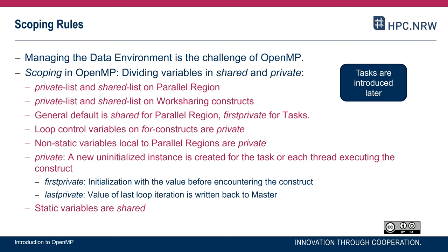The general default is shared for a parallel region — everything declared before the parallel region will be shared, meaning it exists in main memory and all threads have access to it. Everything declared within a parallel region follows this rule: non-static variables local to a parallel region are private. So everything you declare within a parallel region is private. You can think of individual threads encountering this declaration and making the variable private, though technically those variables declared within a parallel region are instantiated on the thread's stack.